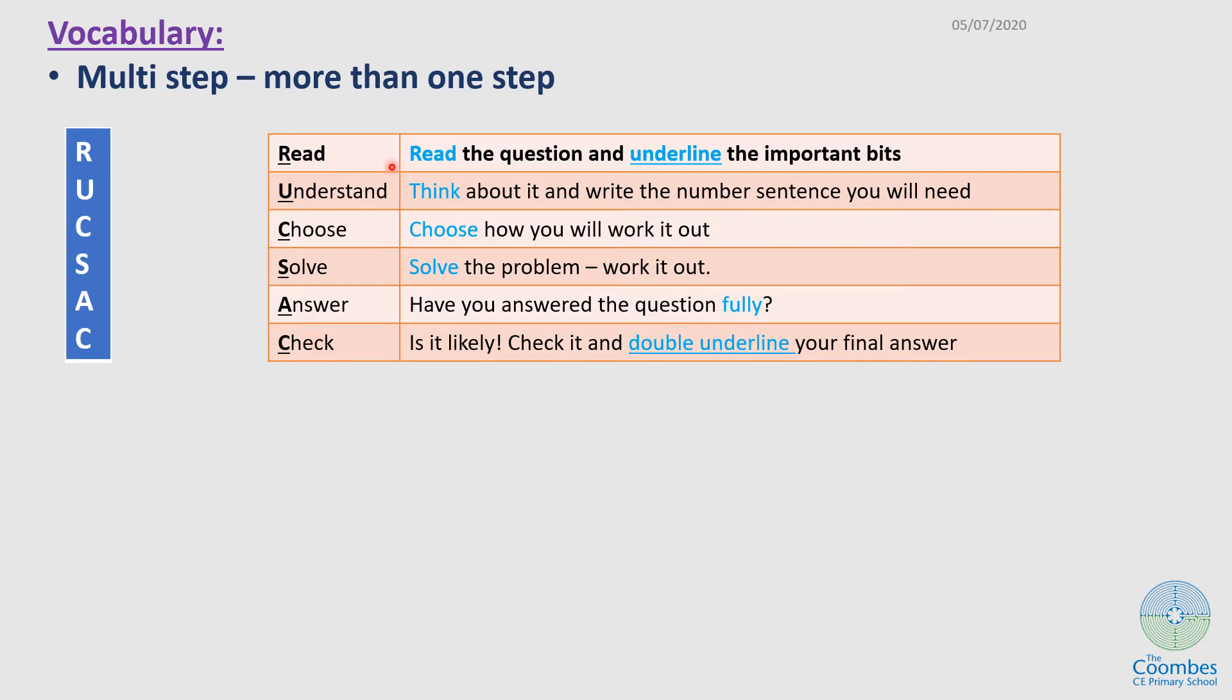Now in reading, you read the question, then underline the important bits. Then you think about it, then you can write a number sentence that you will need. You choose how to work it out, then you work it out and ask yourself whether you have answered the question fully. Now your answer, look at it, is it likely? Then you can check it and double underline your final answer.